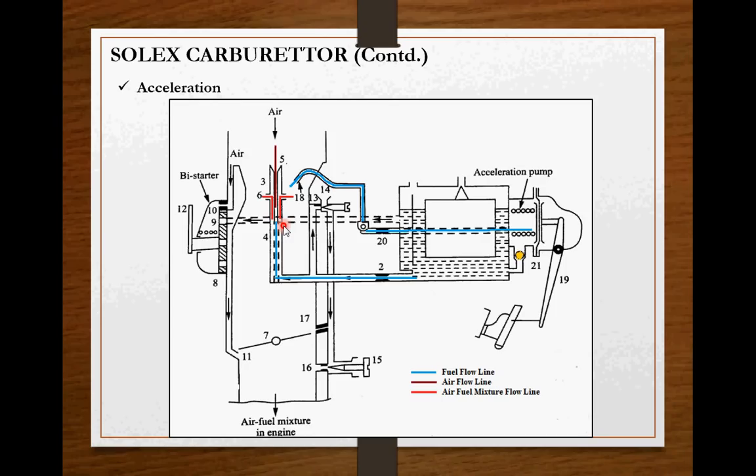As we all know, as the atomization process takes place in this carburetor, even though after the atomization process, some amount of fuel is present in liquid state, which is carried in the same state to the engine cylinder, where it is getting evaporated before the compression stroke. But in order to obtain instantaneous power, you need more amount of atomization. Means you have to supply additional amount of fuel. Now, that work is done by acceleration pump.